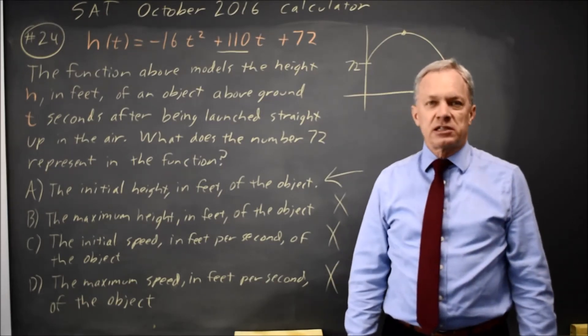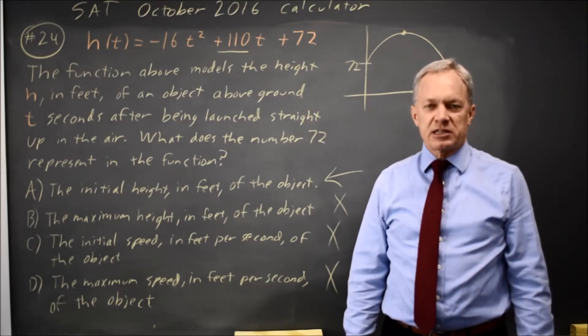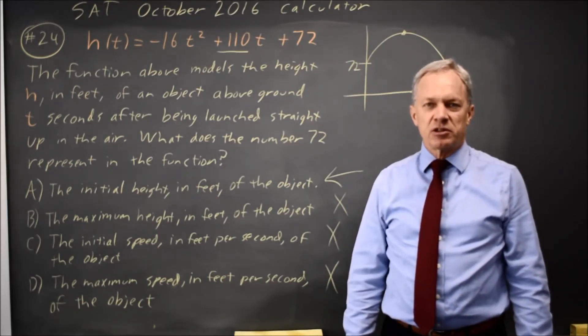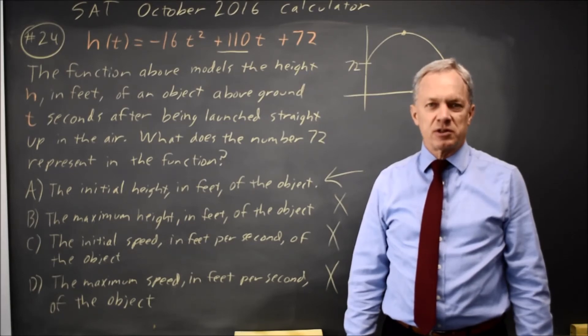Choice A, the initial height, is correct because the initial height is at time 0. And at time 0, your height is 72, which is the 72 in the equation.